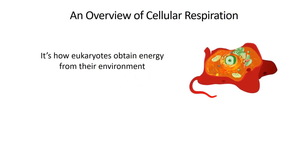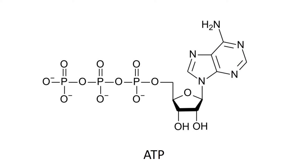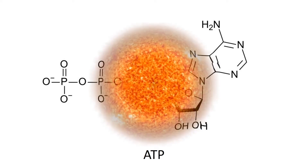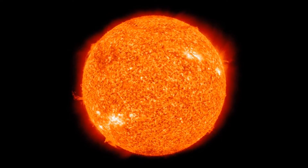Cellular respiration is really important because that's how eukaryotes obtain energy from their environment. Importantly, all life has to transfer energy to this molecule right here. This is ATP, the energy currency of life. It's unfortunate that you and I and every animal — well, almost every animal and a lot of eukaryotes — we can't simply sit in the sun and extract the energy from that and put it in a usable form.